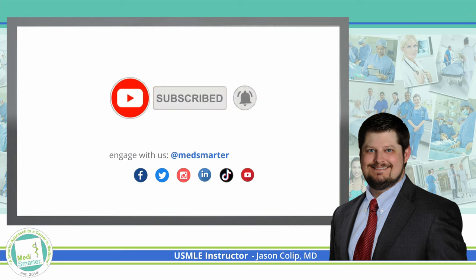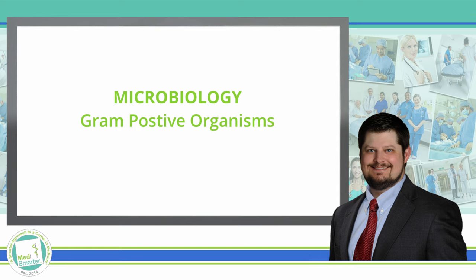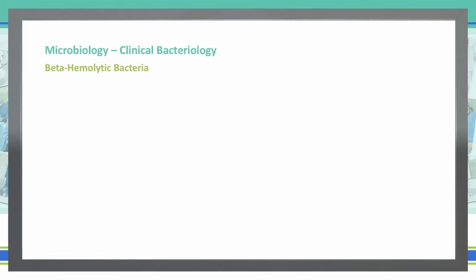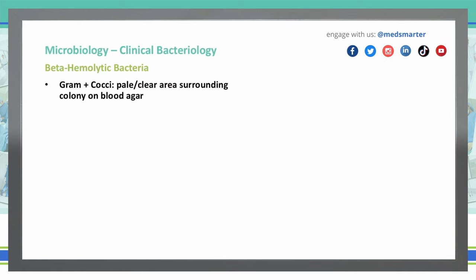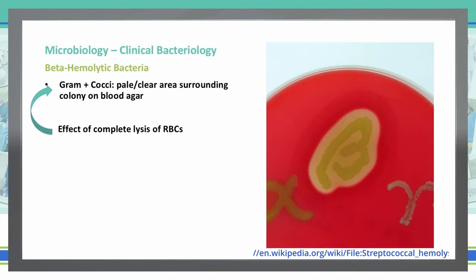Let's continue on with some more clinical bacteriology talking about gram-positive organisms — beta hemolytic bacteria. What does a beta hemolytic bacteria consist of? These are gram-positive cocci that cause a pale or clear area to surround that particular colony when placed on a blood agar plate. As you can see in this picture, what we're seeing is complete clearing of blood around that particular organism on the plate. This is complete lysis of those red blood cells — that bacteria is lysing those red blood cells, completely removing all of the internal structures.